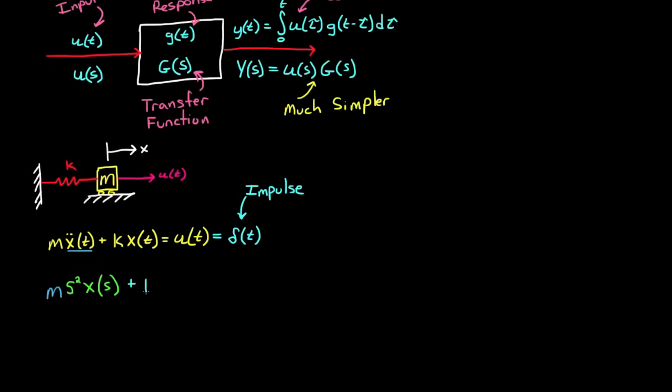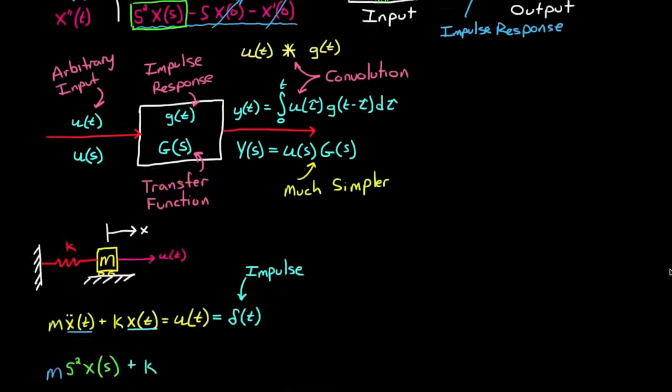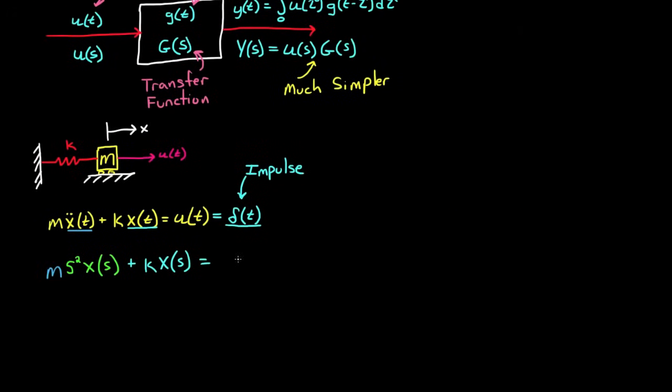Now we can do the same with the second term. We can go back up to our table and find that x of t is just x of s. That seems simple. So we get k x of s. Now we can take the Laplace transform of the right-hand side, which is just the impulse function, which has a Laplace transform of 1. From here, it's just a few algebraic steps to solve for x of s, which is the impulse response of the system in the s domain, which turns out is 1 over ms squared plus k.